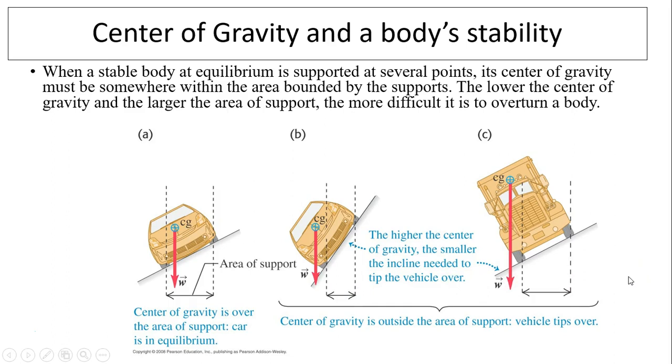Center of gravity and a body's stability. So when a stable body at equilibrium is supported at several points, it means the center of gravity must be somewhere within the area bounded by supports. For example, take a look at situation A. Center of gravity is over the area of supports. So this car is in equilibrium. Take a look at B and C. The center of gravity is outside of area of support. So in both cases, the vehicle will tip over. Another thing is the lower the center of the gravity and the larger the area of supports, the more difficult it is to overturn the body.